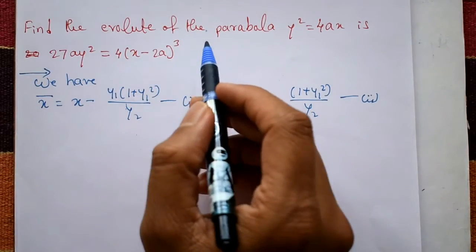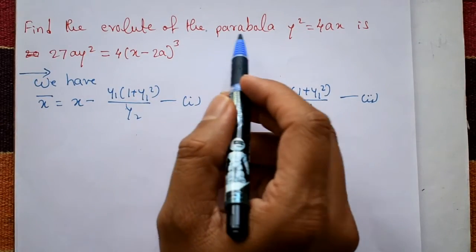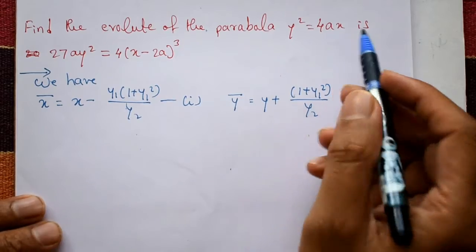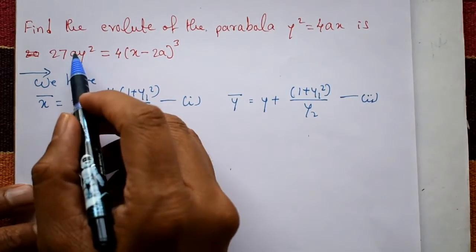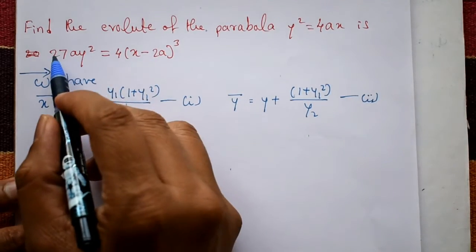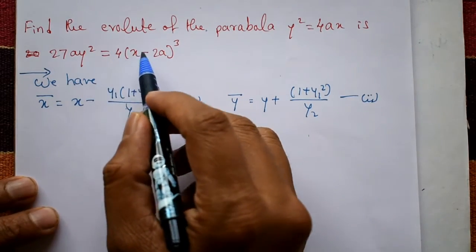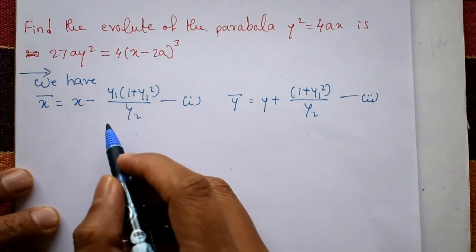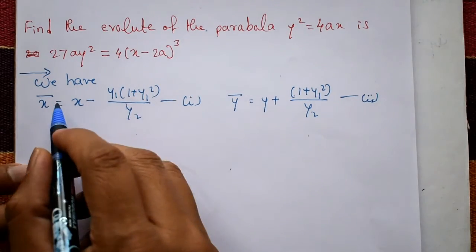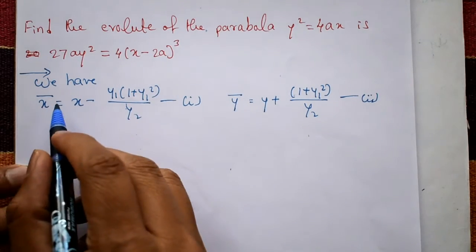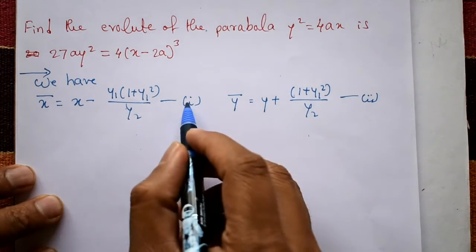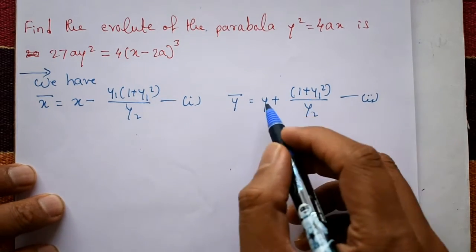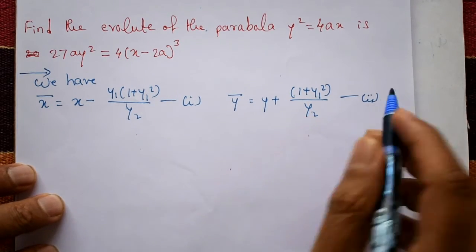Find the evolute of the parabola y² = 4ax. We have to show that 27ay² = 4(x - a)³. Now for the solution, we have the x̄ equation, called equation number 1, and the ȳ equation, equation number 2.